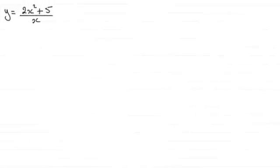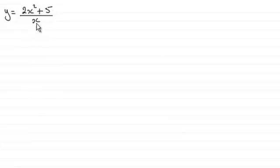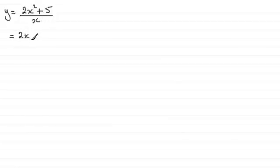Hi there, welcome to this video tutorial on the quotient rule for differentiation. The quotient rule is a method that we use for differentiating fractions, where in the numerator we've got a function of x and in the denominator we've got a function of x. In the past, you might have had this type of question and handled it by just dividing each of the top two terms by the x. So 2x squared divided by x gives us 2x, and plus 5 divided by x is 5 over x, or simply 5x to the power minus 1.